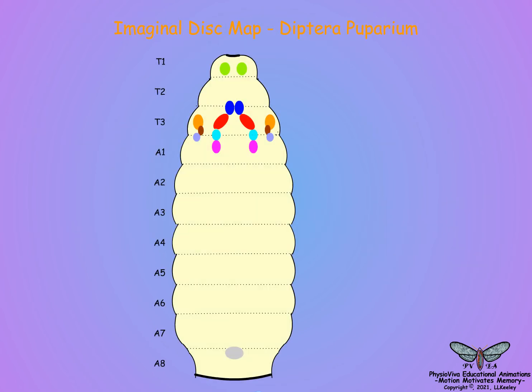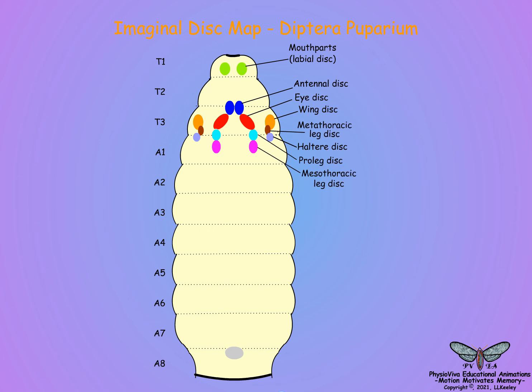During adult metamorphosis, special imaginal disc cells are activated to produce the adult structures, such as mouthparts, antennae, eyes, wings, halteres, legs, and genitals, as shown in this diagram of a fly puparium.